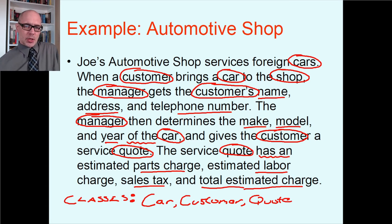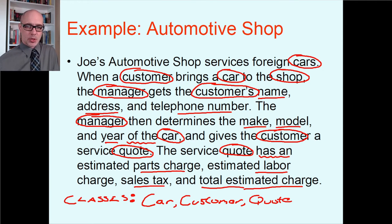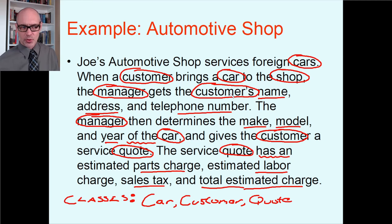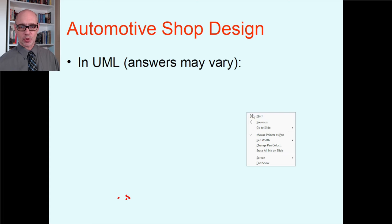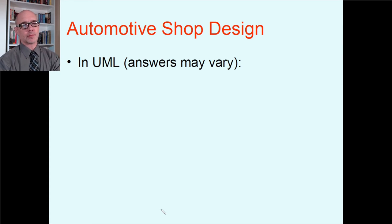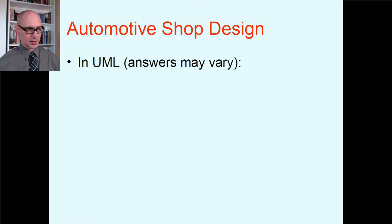I'd be working on a whiteboard with the rest of my team as I do this. The descriptors I underlined belong to these particular objects: customer needs name, address, and telephone number; car needs make, model, and year; and quote needs estimated parts charge, labor charge, sales tax, and estimated charge. Here is the automotive shop design in UML from the book. Let's start with the customer class — there will be some variance in how people design these things, and that's expected.